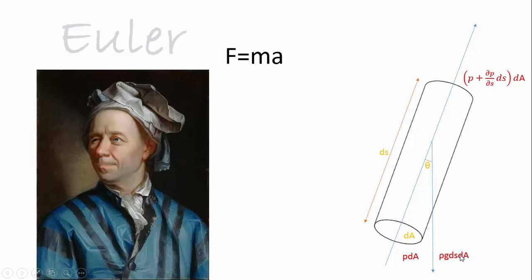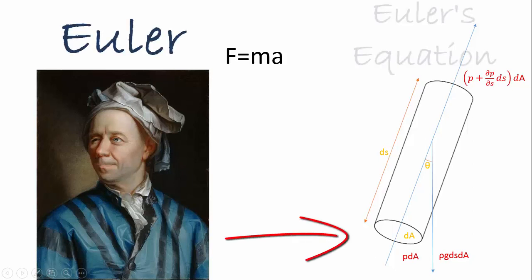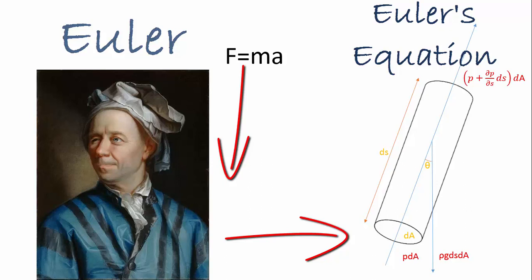A famous Swiss mathematician Euler derived his equation from our well-known Newton's second law of motion: F is equal to mass times the acceleration.